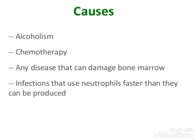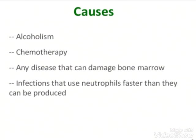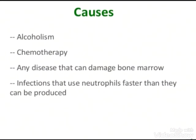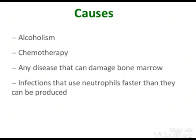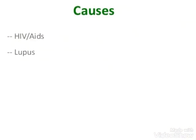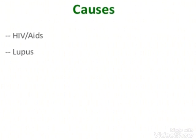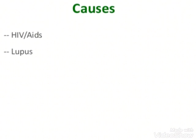Now we will see the causes of neutropenia in human beings. The main causes are alcoholism, chemotherapy, any disease that can damage the bone marrow, infections that use neutrophils faster than they can be produced, HIV/AIDS, and lupus. In all these causes you can see the similarity — they affect the immune system. Whenever there is a reduction in immunity, the body is not able to fight against diseases, leading to a decreased neutrophil count.